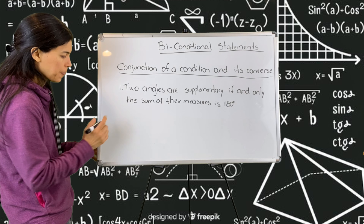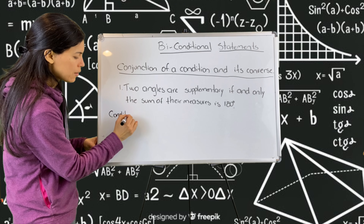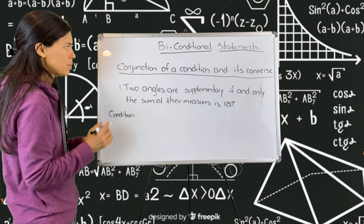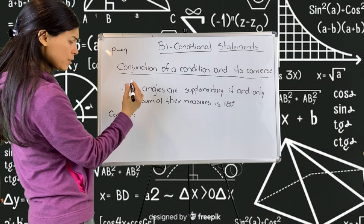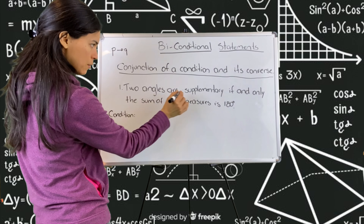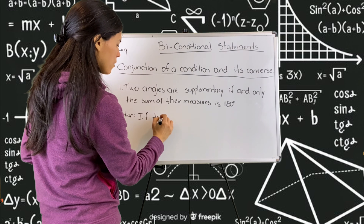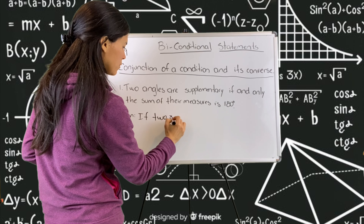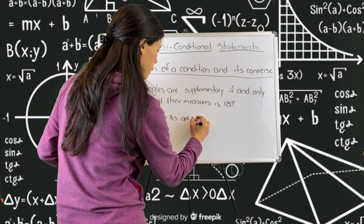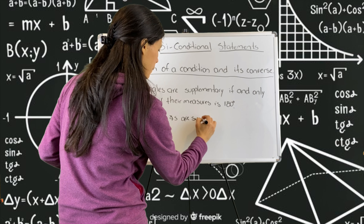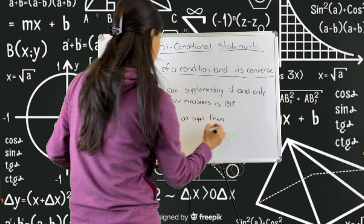Two angles are supplementary if and only if the sum of their measures is 180 degrees. Now these are biconditional statements. They're asking you to write the condition and the converse, and then to decide whether or not they are true. So let's start with the condition — that's what you have. What is the condition here? Remember the condition: if P, then Q.